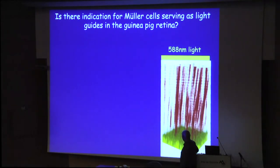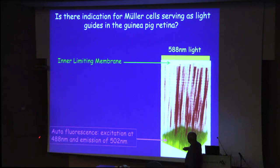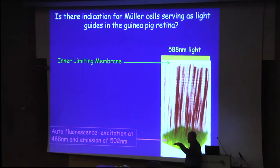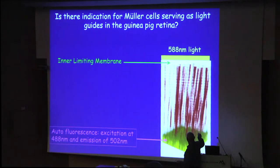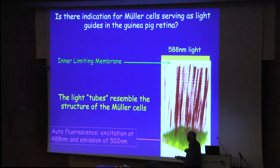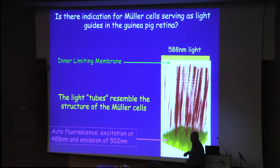We took a piece of guinea pig retina and placed it on a confocal microscope. Using autofluorescence, we located the outer segments of the photoreceptors. We measured light transmission in 5-micron sections going up through the retina using 588-nanometer light, and identified hot spots. Using the computer to combine them, we got structures that look like tubes connected together in each level — and the only tube-like structure in the mammalian retina is Müller cells. So yes, Müller cells probably act like optical tubes.